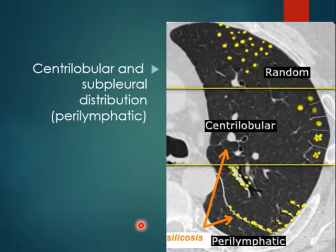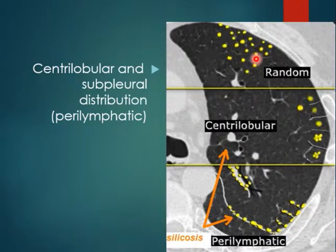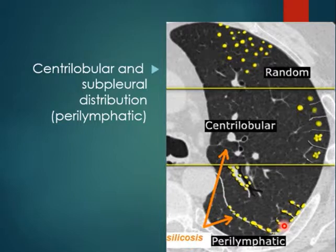To review: the distribution of silicosis nodules is centrilobular and subpleural/perilymphatic. We rarely see a random distribution. Most of the time it is either centrilobular or peribronchovascular/perilymphatic.